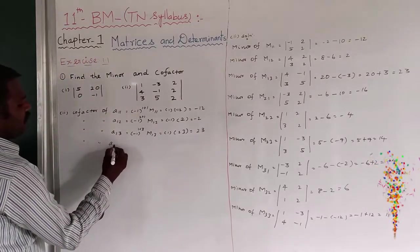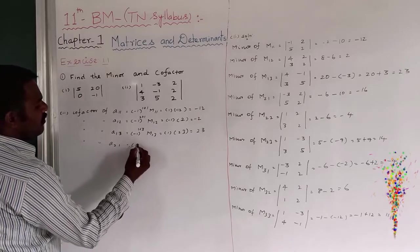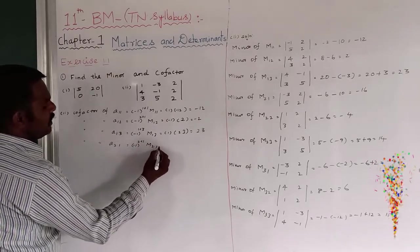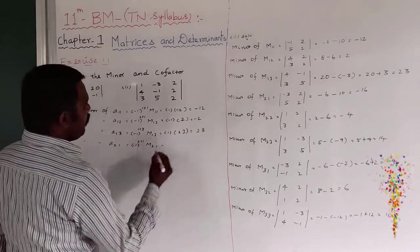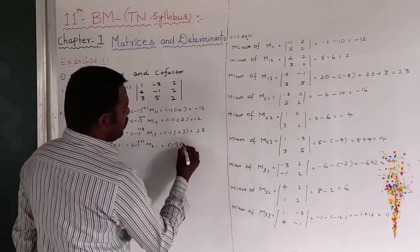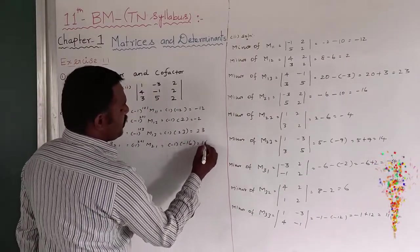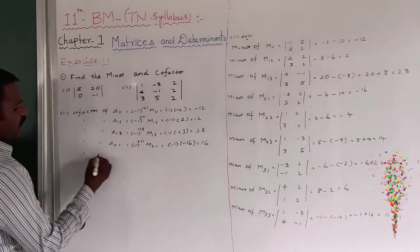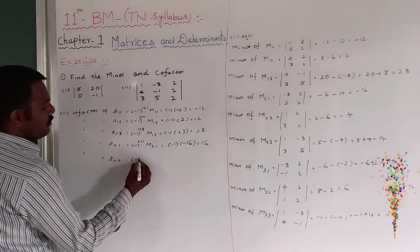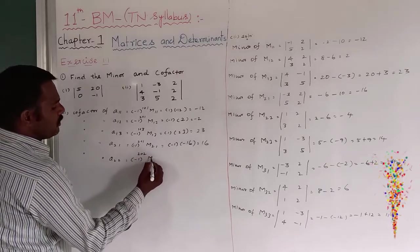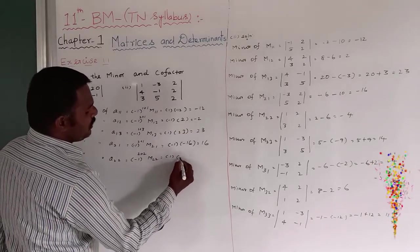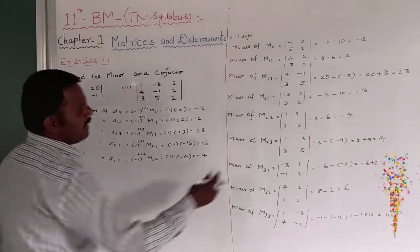Cofactor of a21, first row second column: minus 1 to the power 2 plus 1, times M21. So minus 1 to the power 3 is minus 1. M21 is equal to minus 16, so therefore it is going to be plus 16. And cofactor of a22: minus 1 to the power 2 plus 2, times M22. So plus 1. M22 is minus 4, so this is equal to minus 4.